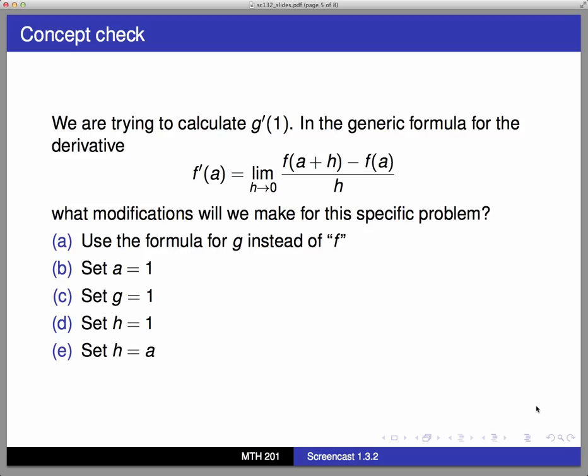So let's do a quick concept check here. We're going to try to map this formula that works in general onto our specific problem. We're trying to calculate g'(1) for a specific function g and the point x = 1. So in the generic formula for the derivative, which I repeated here, what do we need to modify in order to make this fit our specific problem?